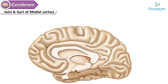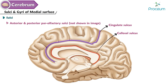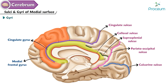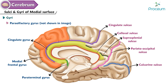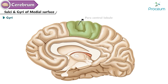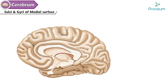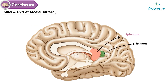On the medial surface of the cerebral hemisphere, the sulci include: callosal sulcus, cingulate sulcus, anterior and posterior para-olfactory sulci, suprasplenial sulcus, parieto-occipital sulcus, and calcarine sulcus. The gyri include: cingulate gyrus, medial frontal gyrus, paraterminal gyrus, parolfactory gyrus, cuneus, and precuneus. The paracentral lobule is the continuation of the precentral and postcentral gyri on the medial surface and is the higher center for micturition and defecation. The isthmus is the narrow region between the splenium and the calcarine sulcus.